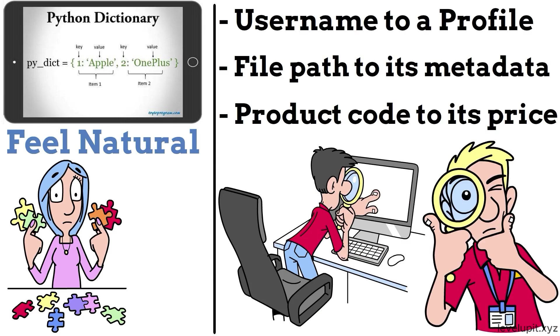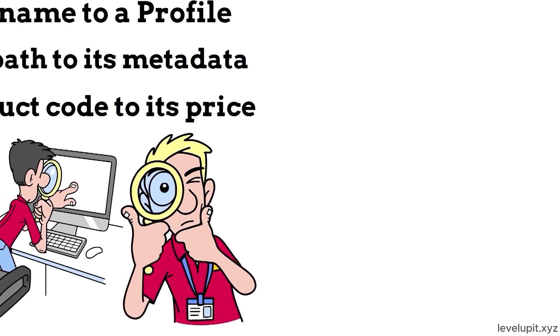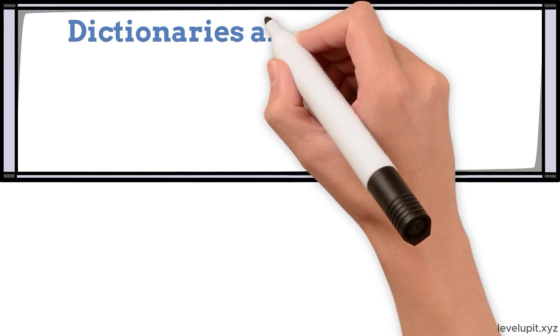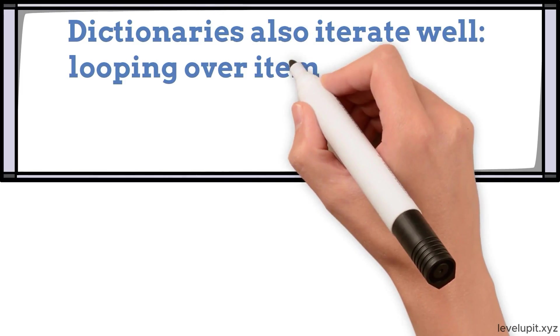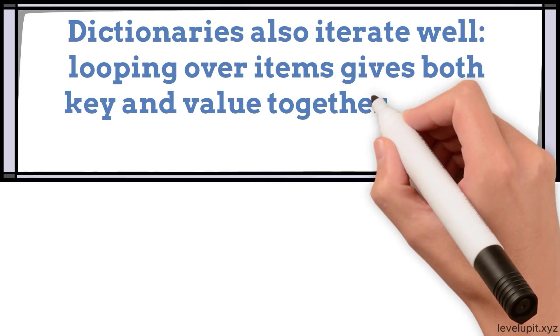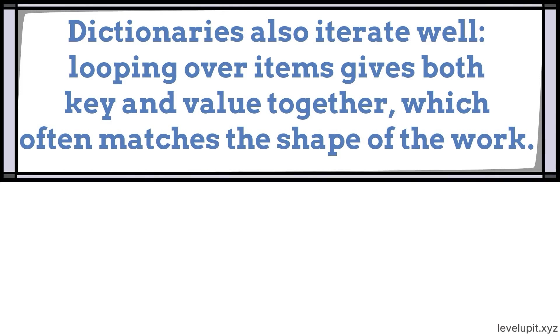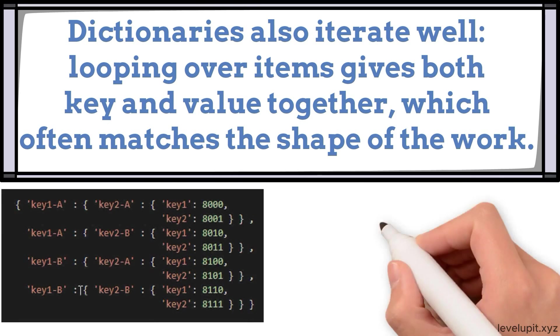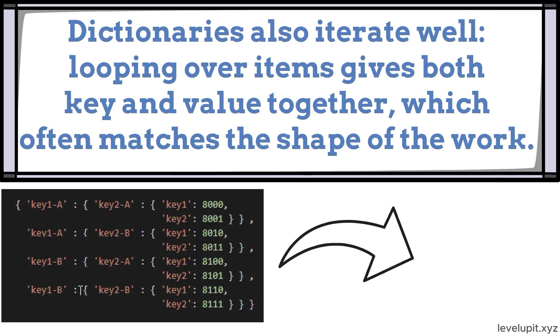If a key might be missing, the get method returns a default instead of raising an error, which keeps code calm and readable. Dictionaries also iterate well. Looping over items gives both key and value together, which often matches the shape of the work. If dictionaries become deeply nested and hard to read, consider small named structures to improve clarity. But for most tasks, dictionaries are the cleanest way to express relationships in code.